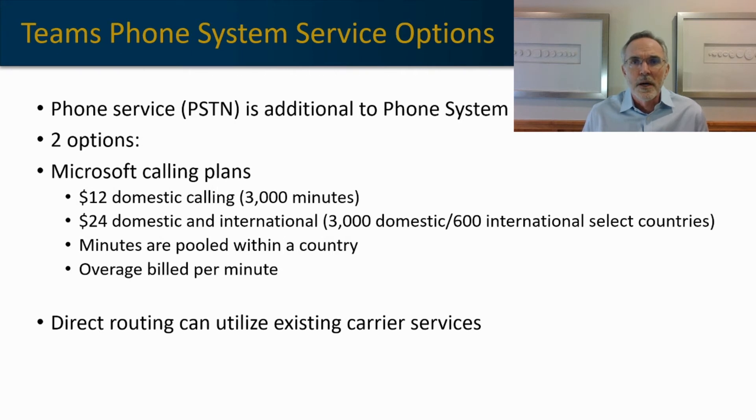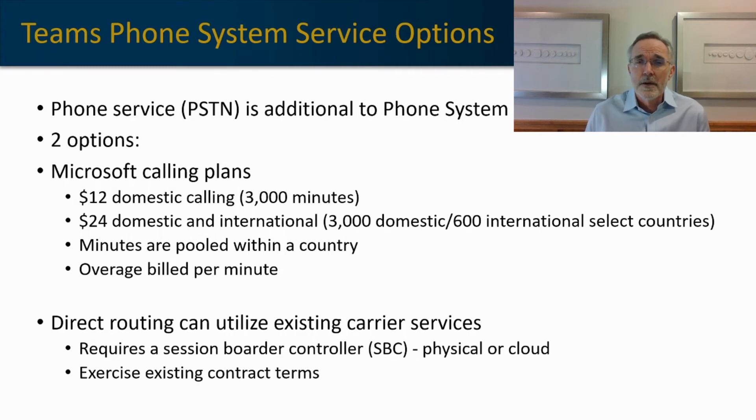There's an alternative to Microsoft calling plans and that's called direct routing, where you're using a third-party carrier or service provider in order to provide your connectivity to the PSTN. Direct routing requires a session border controller or SBC to provide the interface between the Microsoft calling plan and your carriers SIP trunks or other connectivity services. You can use direct routing if you want to optimize your cost structure or if you have existing carrier services that are still under contract. Generally, it's understood in the industry that using the direct carrier route or direct routing method will provide you better service and generally better pricing, but it's worth doing the math to compare it to the Microsoft calling plans.